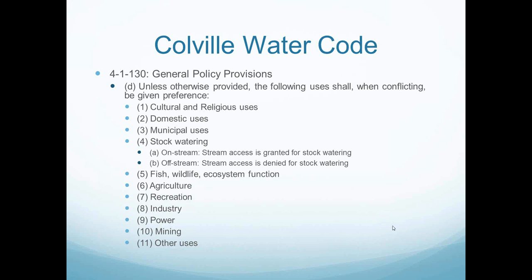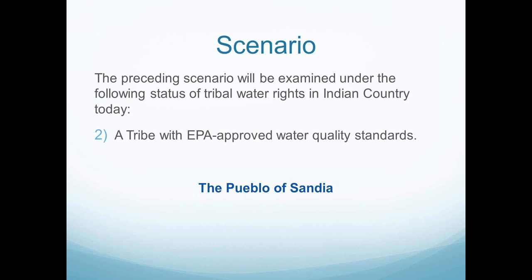That was the Colville Tribes Water Code overview. The next portion of the scenario will look at a tribe with EPA approved water quality standards. I'd like to have Scott Bulgrin, the water quality manager from the Pueblo of Sandia, join us. Good afternoon. My name is Scott Bulgrin and I am the water quality manager for the Pueblo of Sandia. I've been in that position for 14 years and I'm responsible for a wide variety of environmental and natural resource programs on the Pueblo. Pueblo of Sandia is a tribal nation outside of Albuquerque, New Mexico.